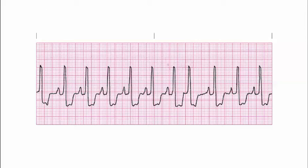We've identified that looking at the rhythm, we've got one spot that seems to be coming prematurely. So we're going to take a look at this particular beat. We need to compare it against what we know, so we can look at one that we recognize. Here's your P wave, QRS complex, your PR interval.